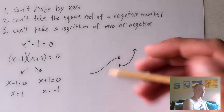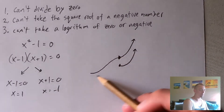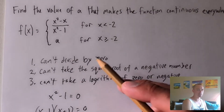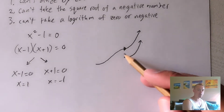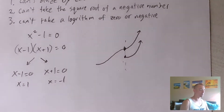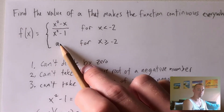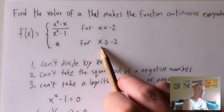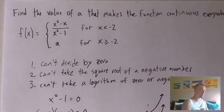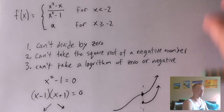However, if we move the function up a little bit to fill in the hole, now it would be continuous. Basically, we need to make sure the two pieces line up height-wise at the X value where we switch from one to the other. That means we need the output of each function to be the same when X equals negative two. To do that, we plug in that X value into both piecewise functions and set them equal to each other.